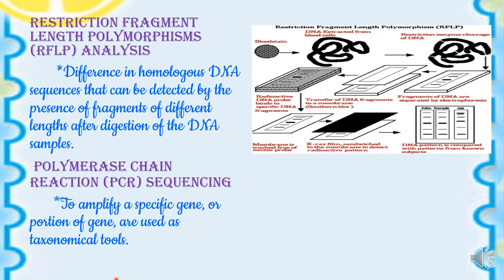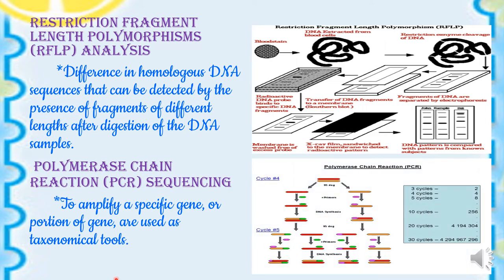Polymerase chain reaction (PCR) sequencing is used to amplify a specific gene or a portion of a gene and is used as a taxonomical tool. PCR makes a number of copies of a part of the DNA. This amplified form of DNA helps us study the characteristic features of different organisms. Here they are showing the method of amplification.